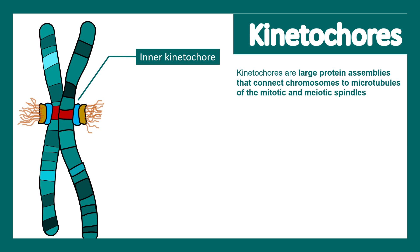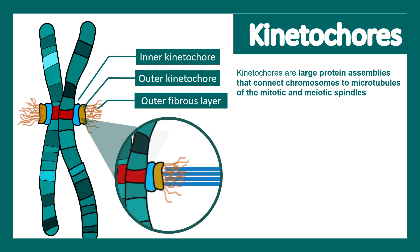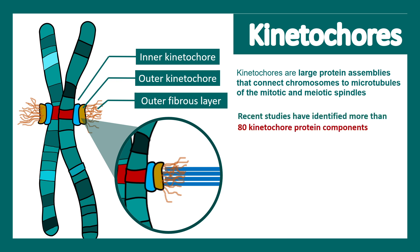It's a huge protein assembly and its key job is to assemble the microtubules with the centromeric region. There are three sub-regions of the kinetochore: the inner kinetochore, the outer kinetochore, and the outer fibrous layer. The outer fibrous layer ensures it can attract microtubules towards the centromeric region. Recent studies have found there are more than 80 kinetochore core protein components, and there are many other indirect interactors as well.